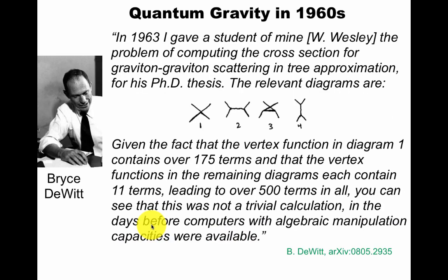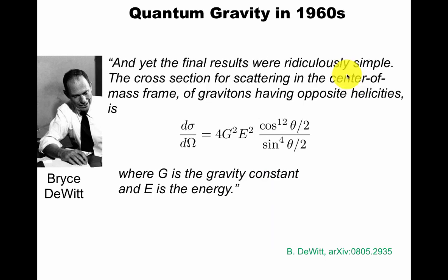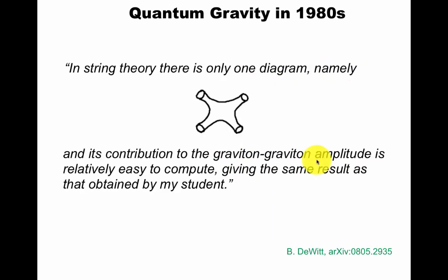In 1963, I gave a student of mine the problem of computing the cross-section for graviton-graviton scattering. Graviton would be the quantum carrying the gravitational wave, just like the photon is the quantum carrying the electromagnetic wave. The relevant Feynman diagrams would be these. They lead to over 500 terms, but the final result is very simple.